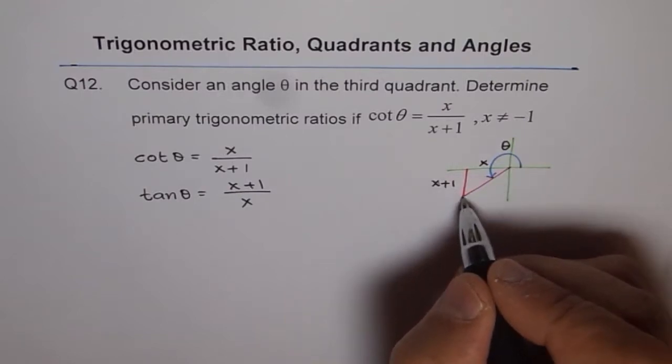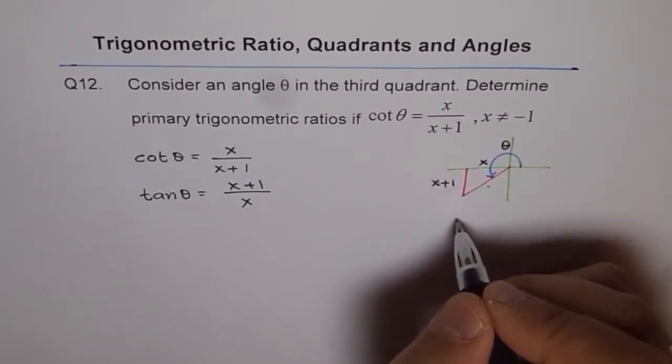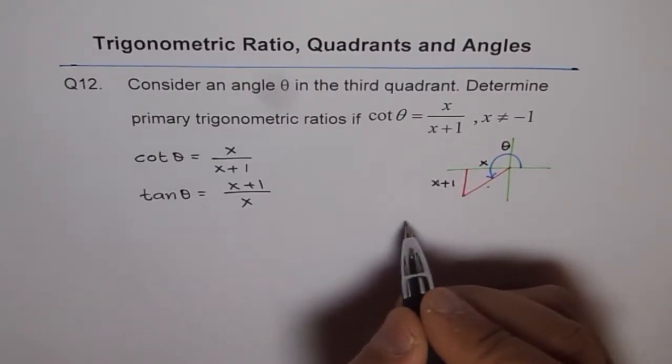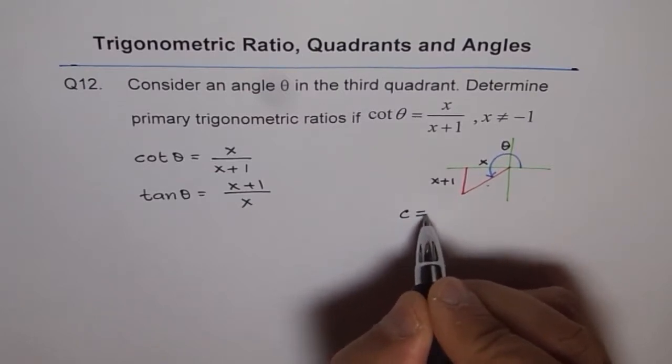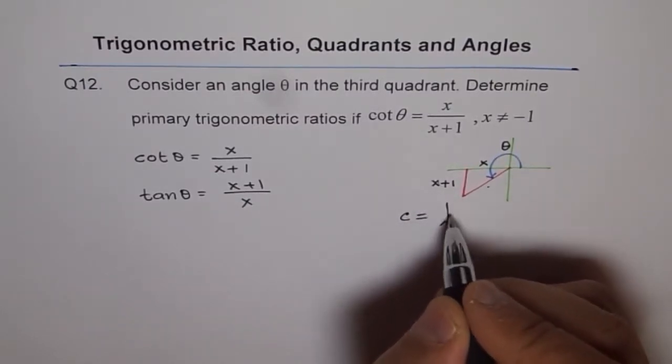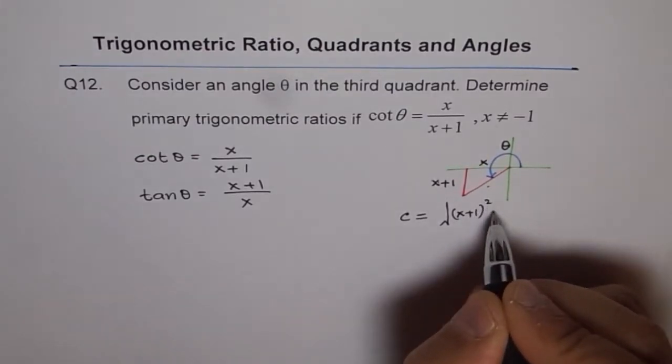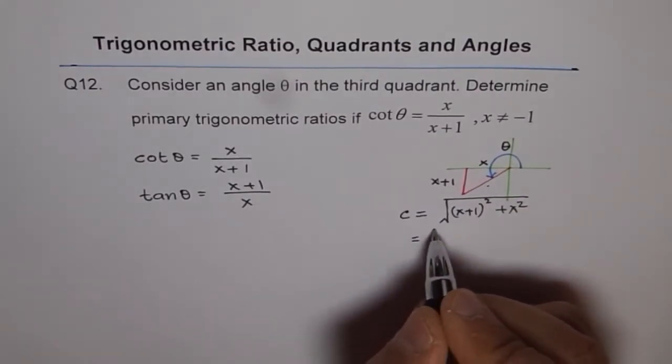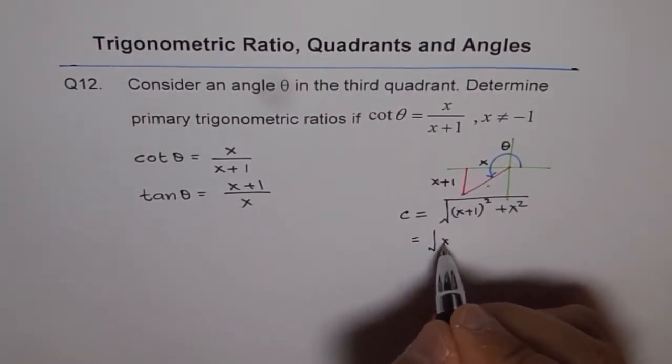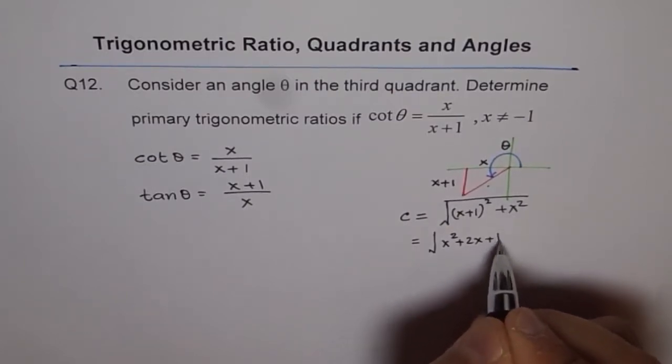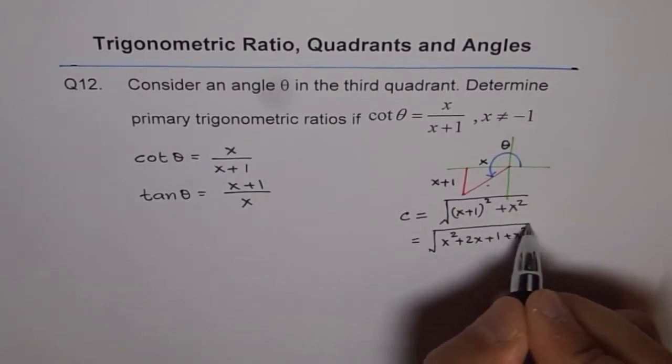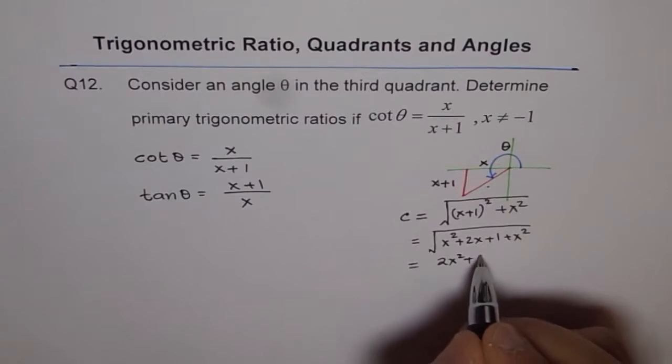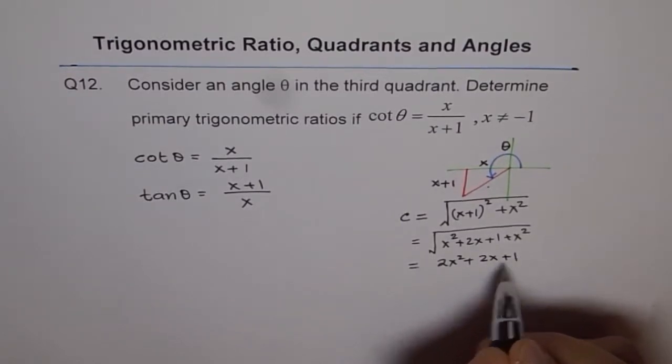Now we need to find hypotenuse. So let's call this as c for the time being. From here we can say c is equal to square root of x plus 1 whole square plus x square. From the Pythagorean theorem, right? Let's expand it. So we get x square plus 2x plus 1 plus x square. Then this gives us 2x square plus 2x plus 1 under the square root.